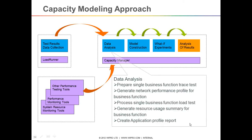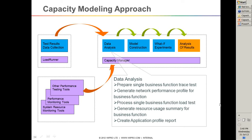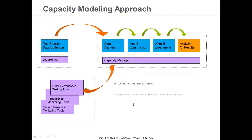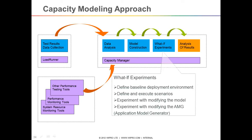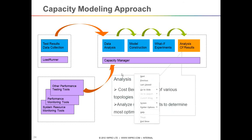The second step is model construction, which means deriving a formula — for which you need to provide input data like hardware topology and the way measurements are going up, to build an application profile. The third is 'what if' — as simple as prediction: what if the CPU is double the size? What if the RAM is four times what it is now? And finally, it's the analysis of results.